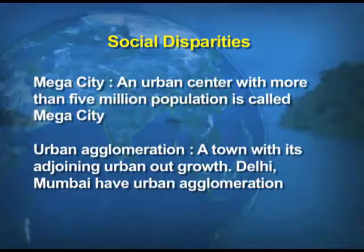Urban agglomeration is a town with its adjoining urban outgrowth — an urban area where the population expands. Examples of urban agglomerations include Delhi and Mumbai, which are the best examples of this.